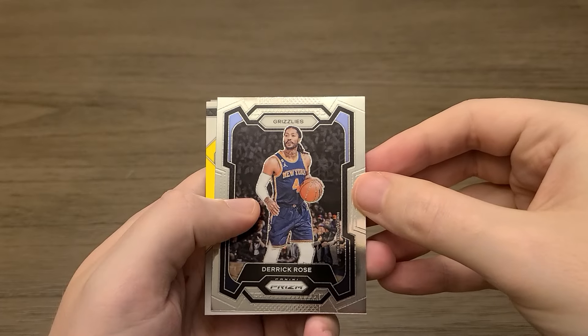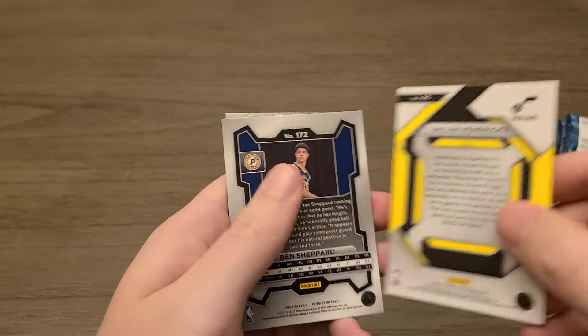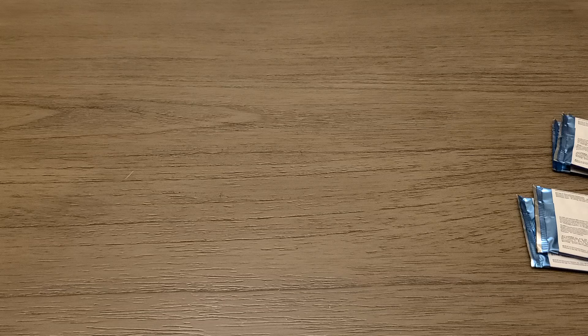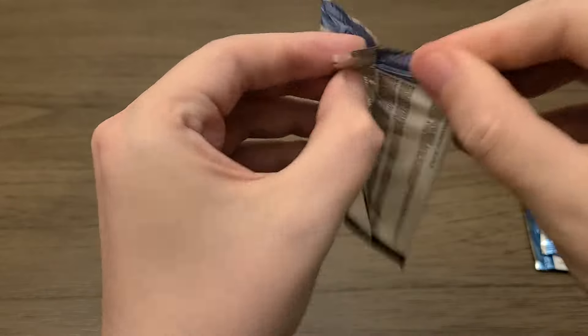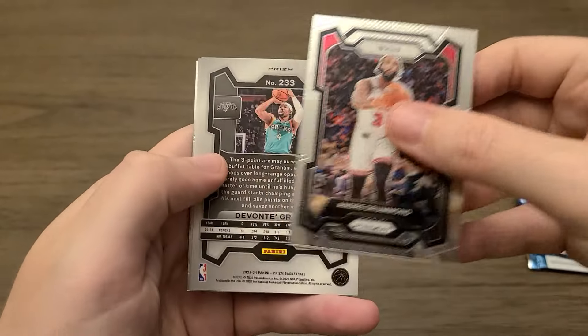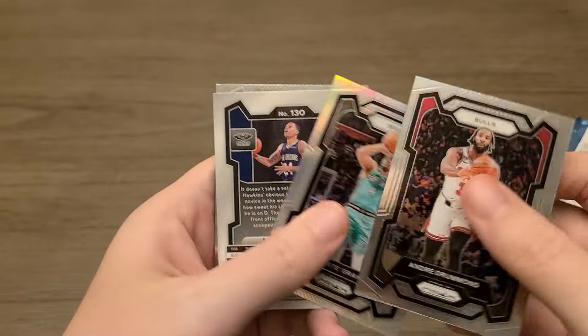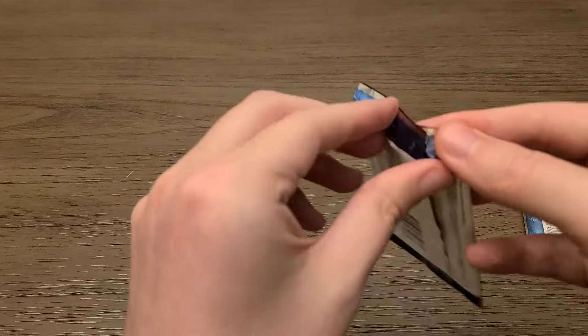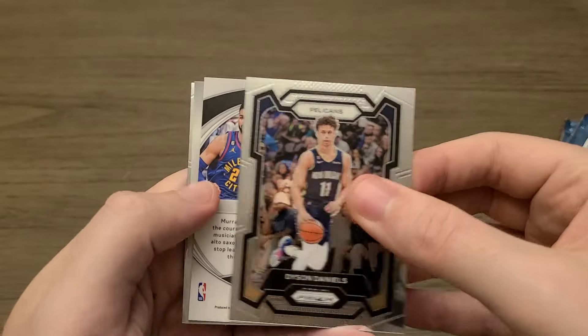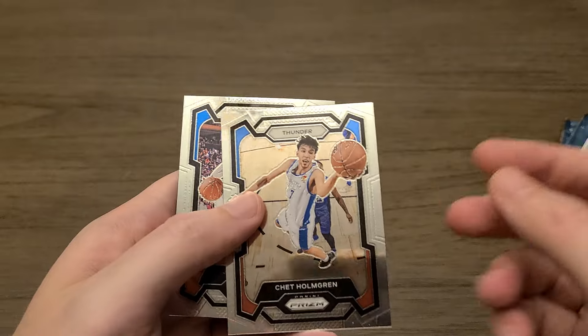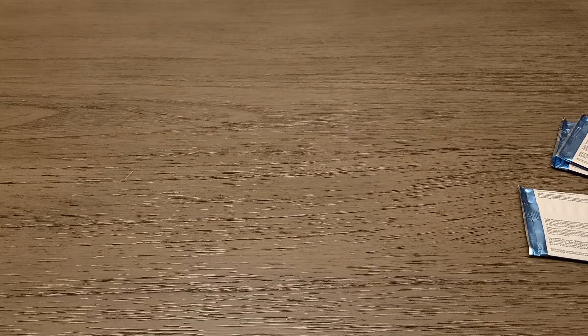Derrick Rose. Oh wow, I didn't realize he was still in the league. Taylor Hendricks. This is an insert, an Emergent. Austin Reeves and Ben Shepard. Alright, five packs to go. All we need is one Wemby, one auto, one more auto. Andre Drummond, that's not going to do it. Devontae Graham Silver Prism. Jordan Hawkins and Emmanuel Quickly. Dyson Daniels. Jamal Murray insert, a Global Reach. Apparently he's Canadian. Hey, there's a Chet Holmgren. That's pretty cool. And a Julius Randle. Alright, three packs to go.